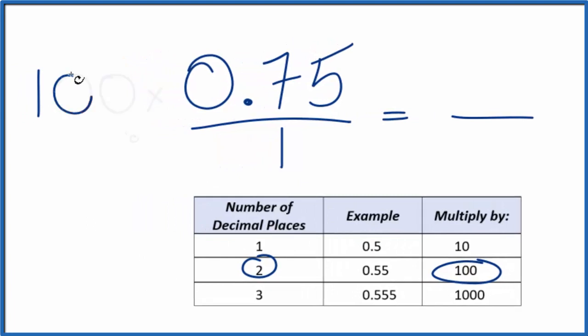So we multiply by 100, and 100 times 0.75, that gives us 75. So now we have our whole number.